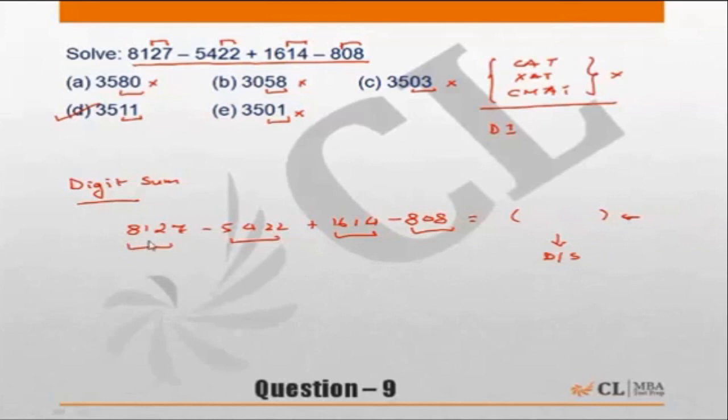So what is the digit sum of 8127? It is 8 plus 1, 9, so ignore the 9 part. 7 plus 2, 9, ignore 9, which means digit sum of 0 or 9. So one of the things which you need to remember: digit sum of 0 is equal to digit sum of 9. So this has a digit sum of 9. Next one, 5422: 5 plus 4, 9, so ignore the 9. 2 plus 2 is 4, so all 9s we will keep on ignoring.